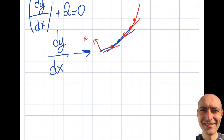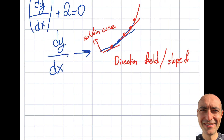Connecting these slopes is actually the solution curve. By plotting the slopes at many many different points, I'll be able to obtain something called the direction field — or slope field. And if I connect the points on a slope field, it will give me an idea of how the solution will look like. This is actually fairly powerful. The best thing is to illustrate this with an example.